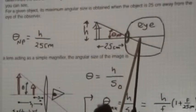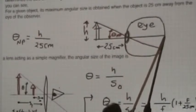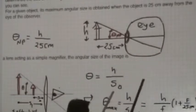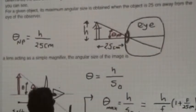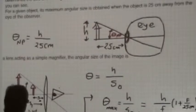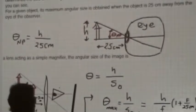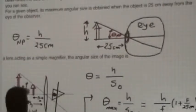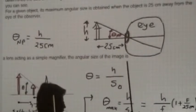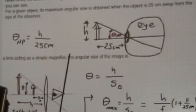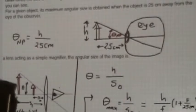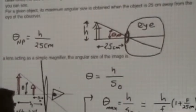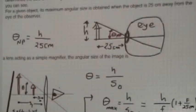A smaller angle means a smaller image on the retina. So as you move the object further away, the object looks smaller. If you want to look at an object as big as it can be, you want to bring it as close to you as possible. But since you cannot focus an object closer than 25 centimeters, that is the limit — that's how big an object is ever going to look to you.